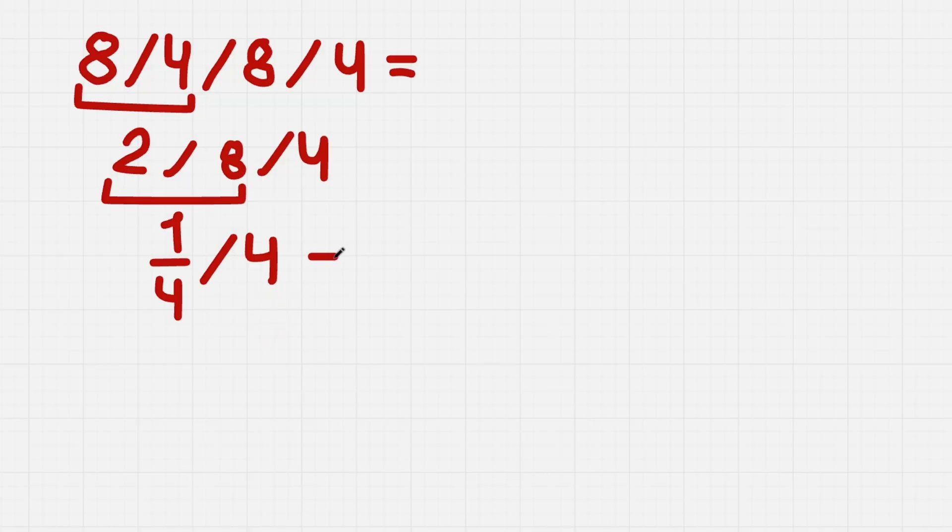We can simplify and transform it into a multiplication. So it is 1 divided by 4 times 1 divided by 4. This 4 was transformed from 4 divided by 1 and we had a division here to 1 divided by 4, but with multiplication.